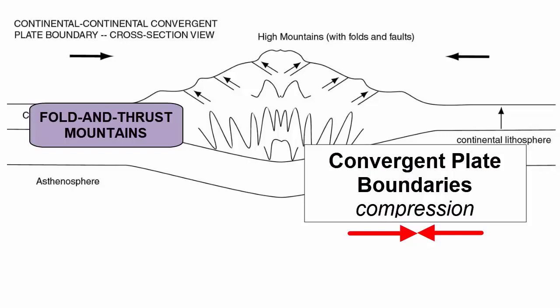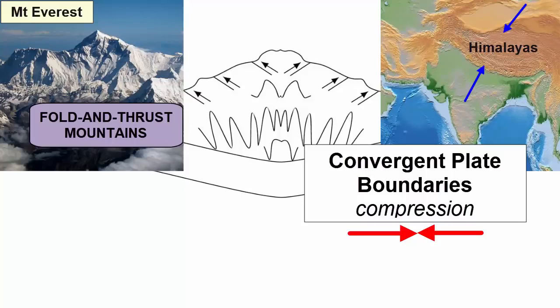As discussed in the isostasy video tutorial, to support high elevation crust atop a plastic asthenosphere, there will be a deep root underneath like an iceberg in the ocean. So not only are the Himalayas the highest elevation crust, the base of the crust under the Himalayas is also the deepest — not surprising considering two thick pieces of continent are now sharing the same space. It will take hundreds of millions of years after tectonic compression stops for the mountains to erode away.